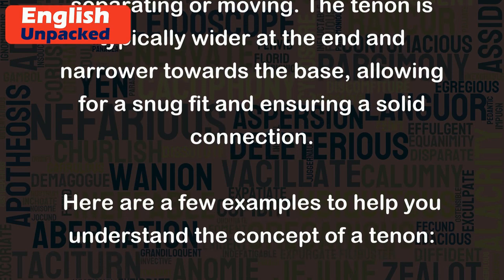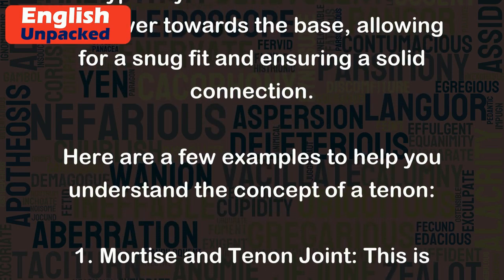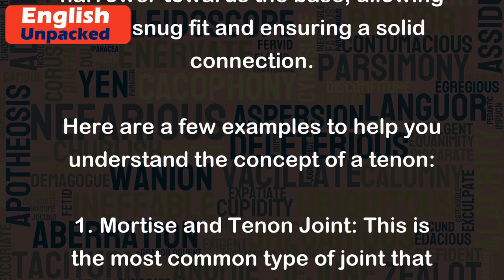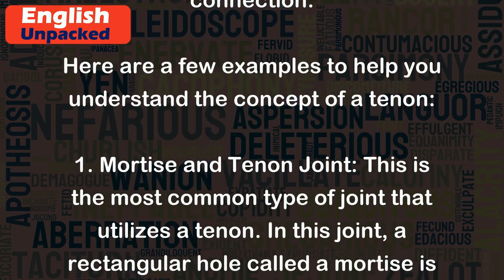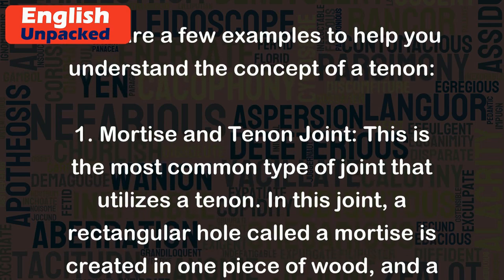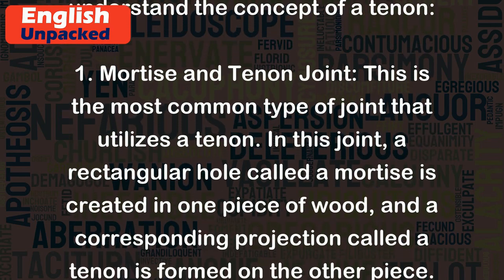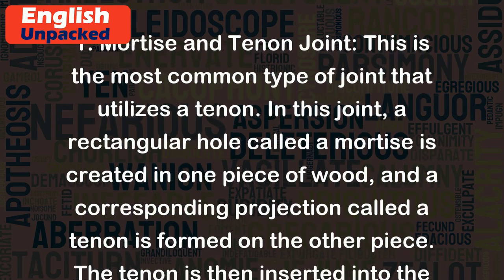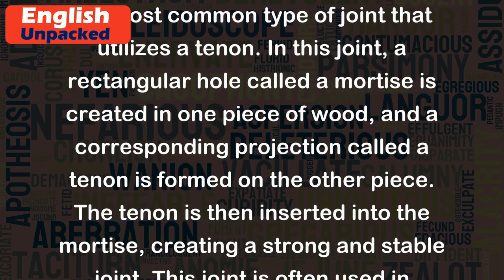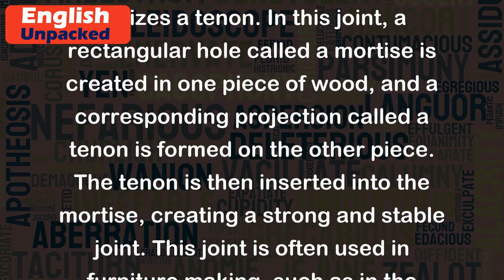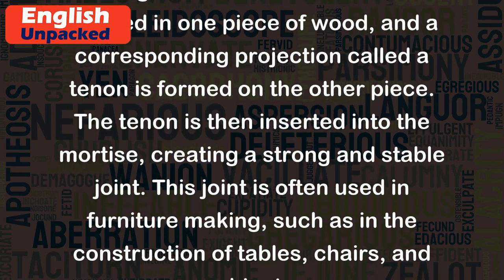Here are a few examples to help you understand the concept of a tenon. 1. Mortise and tenon joint: This is the most common type of joint that utilizes a tenon. In this joint, a rectangular hole called a mortise is created in one piece of wood, and a corresponding projection called a tenon is formed on the other piece. The tenon is then inserted into the mortise, creating a strong and stable joint.